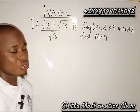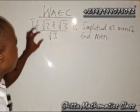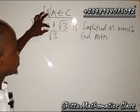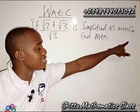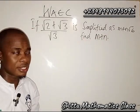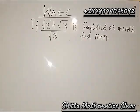You're welcome, let's solve this WAEC question. The question said if root 2 plus root 3 divided by root 3 is simplified as m plus n root 6, find m plus n. So now what are we going to do?